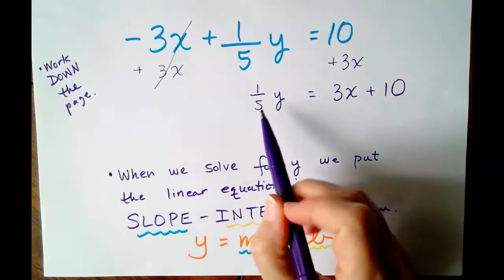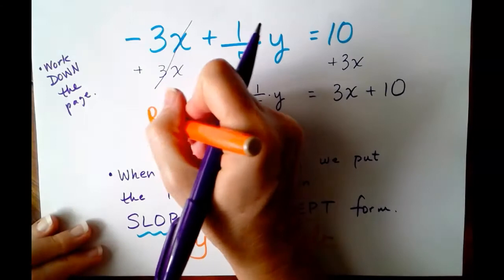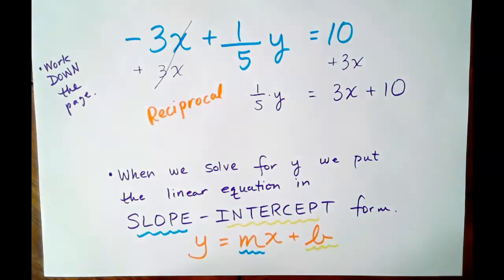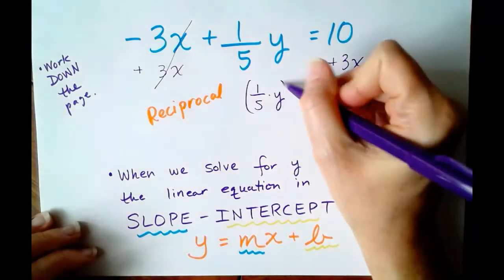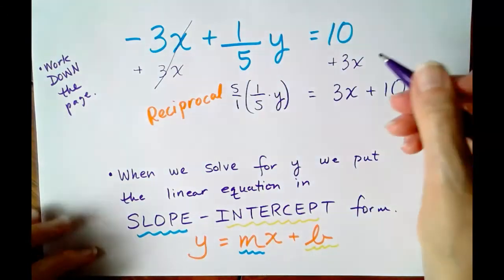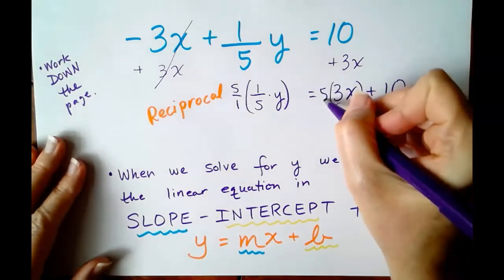Now, next, we have 1 5th times Y. So for us to undo times 1 5th, we are going to use the reciprocal of 1 5th. And the reciprocal of 1 5th is 5 over 1. So we're going to multiply everything by 5 over 1. Of course, 5 over 1 is just the same as 5.